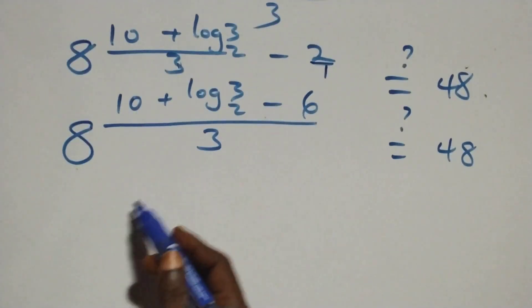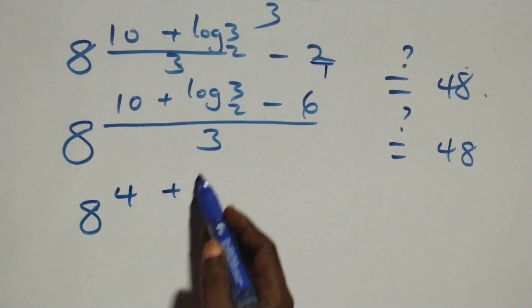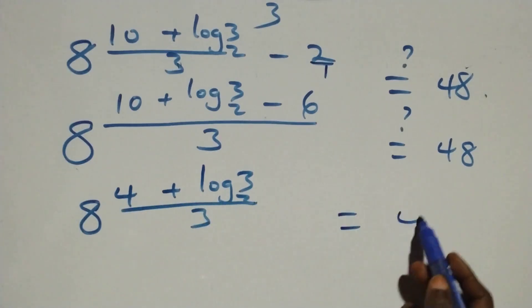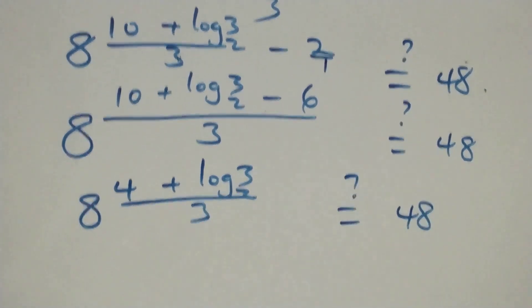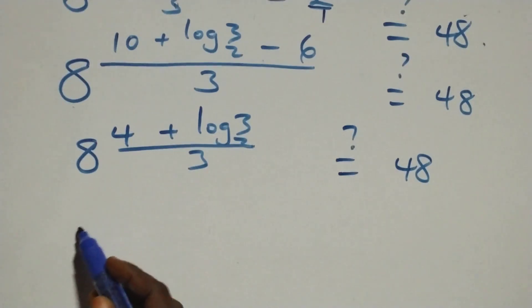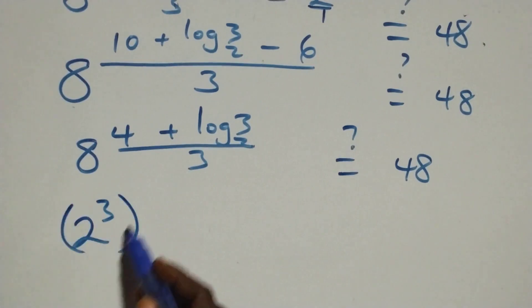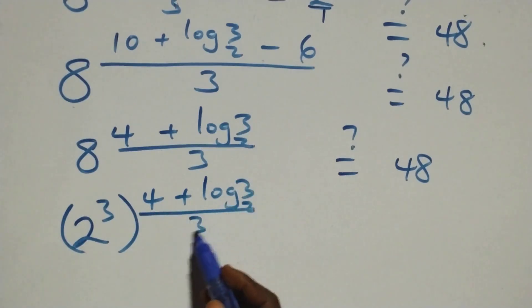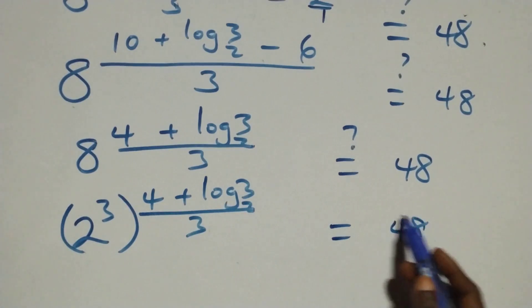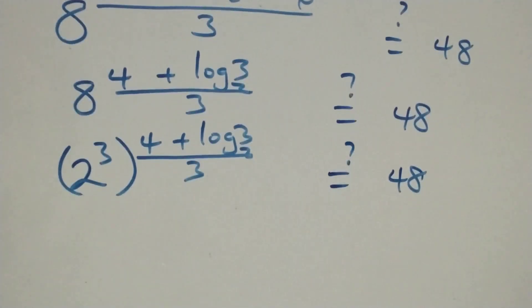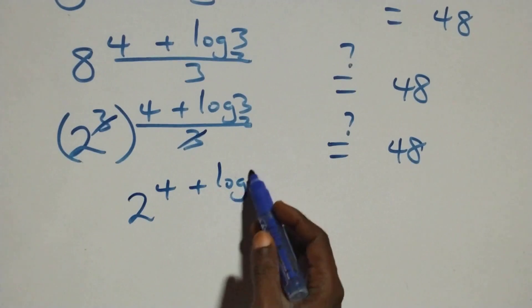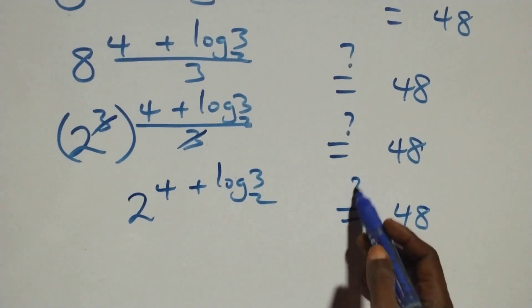We have 10 minus 6 equals 4, so 8 raised to power (4 plus log base 2 of 3) all over 3, equals 48. We write 8 as 2 raised to power 3, so we have (2³) raised to power (4 plus log base 2 of 3) all over 3. The power of 3 and the denominator 3 cancel, giving 2 raised to power (4 plus log base 2 of 3) equals 48.